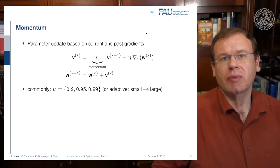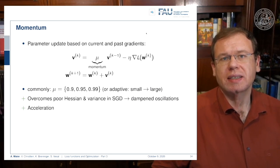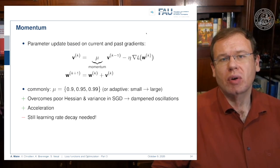Typical choices for mu are 0.9, 0.95, or 0.99. You can also adapt them from small to large if you want to pay more emphasis on the previous gradient directions. This overcomes poor Hessians and variance in the stochastic gradient descent. It will dampen oscillations and accelerate the optimization procedures. Still we need the learning rate decay, so this doesn't solve the automatic adjustment of eta.